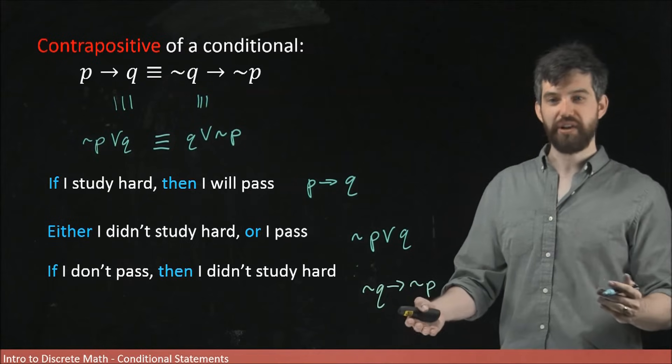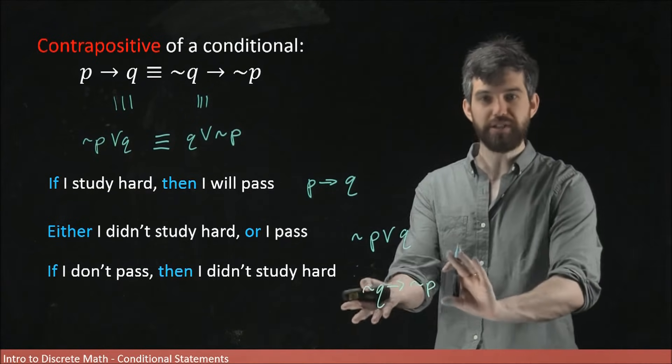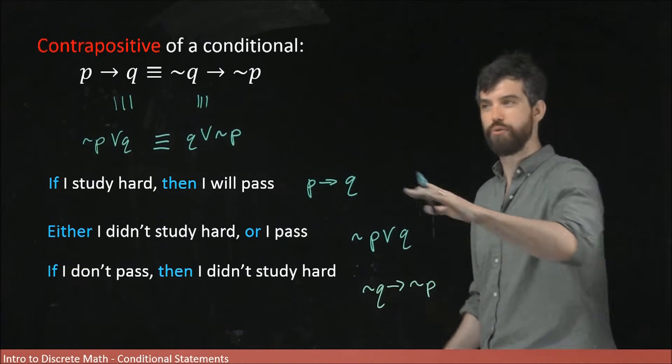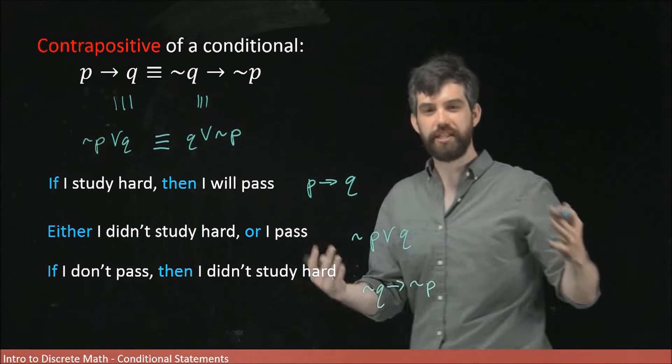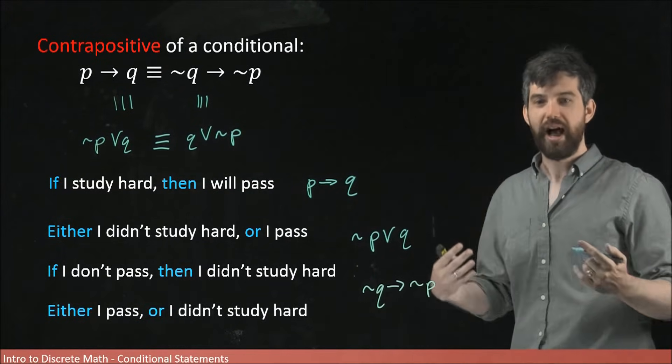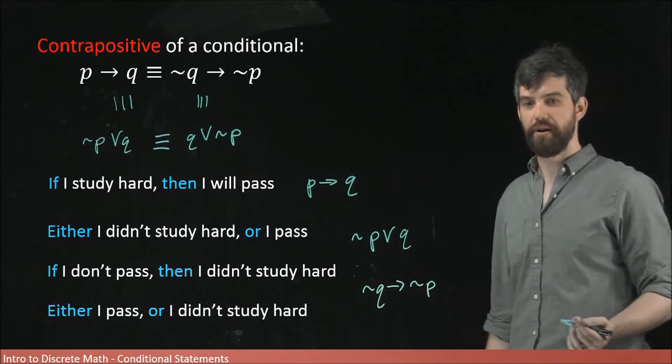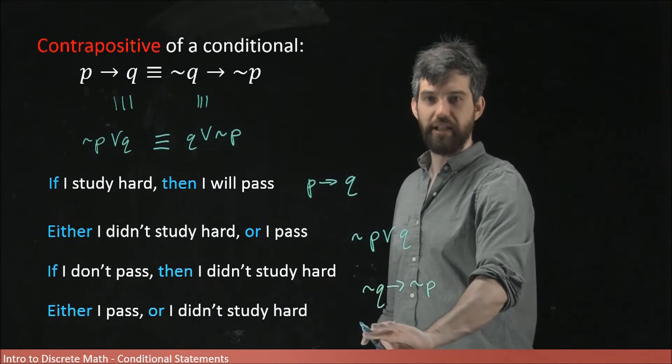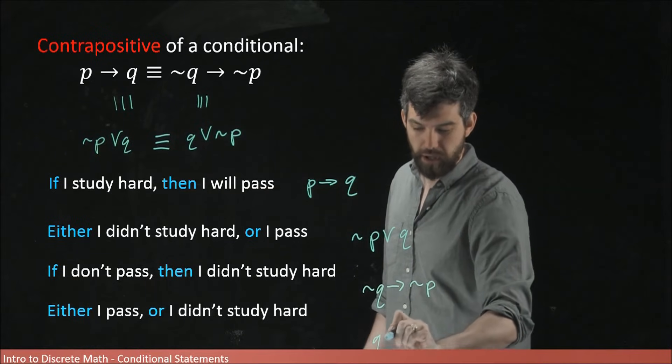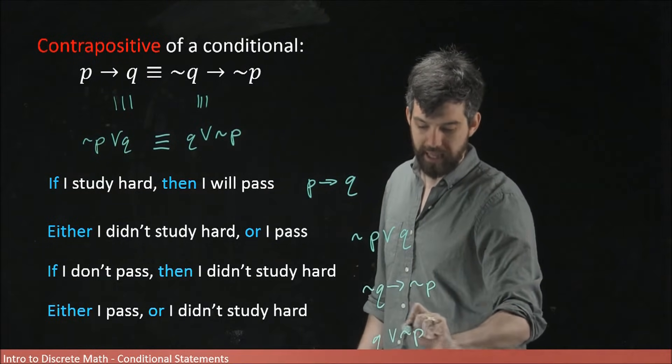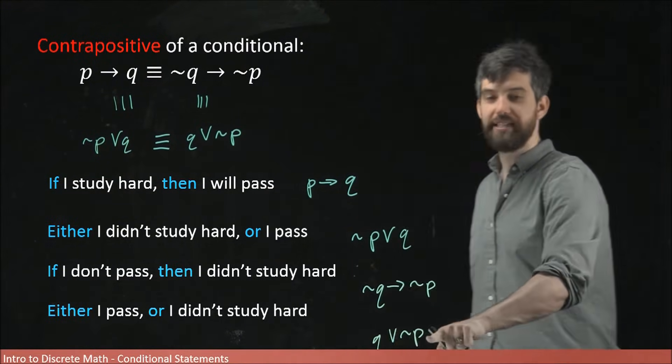And then finally, I can take the contrapositive, what I just have here, and I can write the contrapositive in its disjunctive form as either I did pass or I didn't study hard. And so when I have it in this form, it is of the form Q or not P. Either I passed or I didn't study hard.